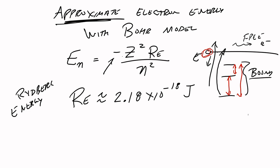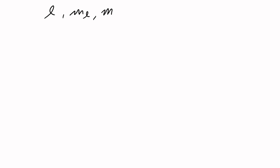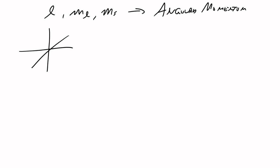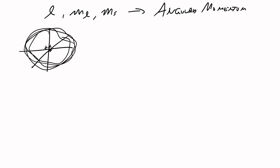The other quantum numbers — L, M sub L, M sub S — are all related to angular momentum in some fashion. You can imagine why: you've got your nucleus and then this electron zipping around, so you have a radial part and then an angular part. These quantum numbers are telling you about the angular parts.